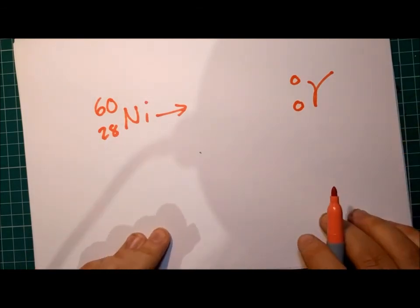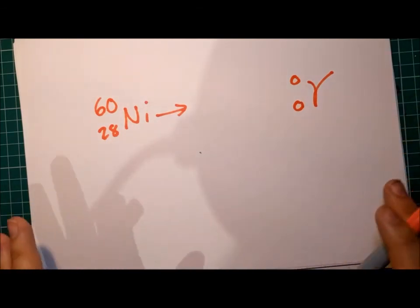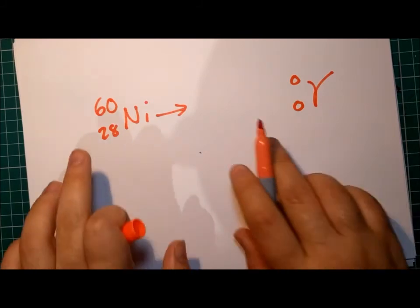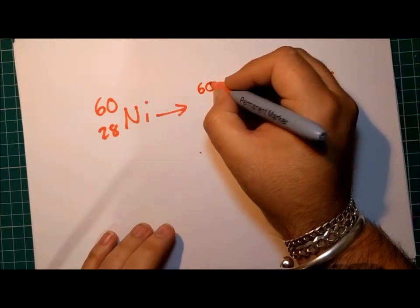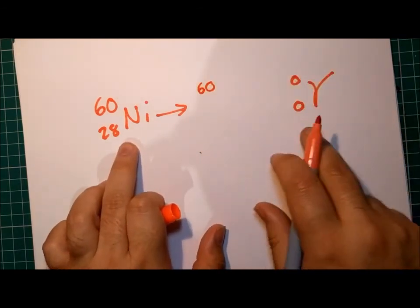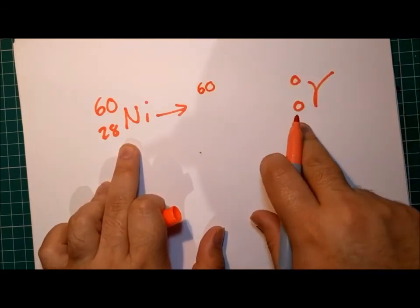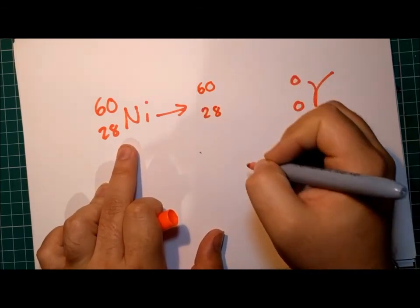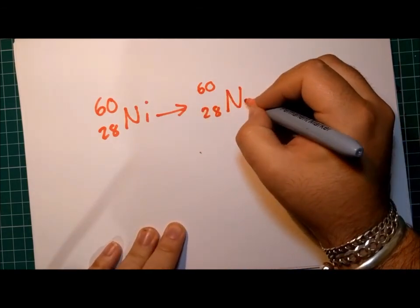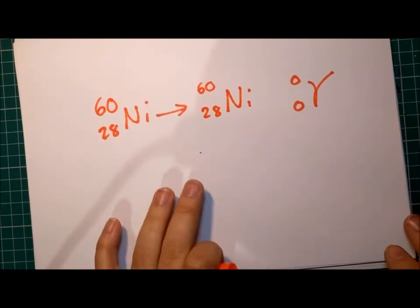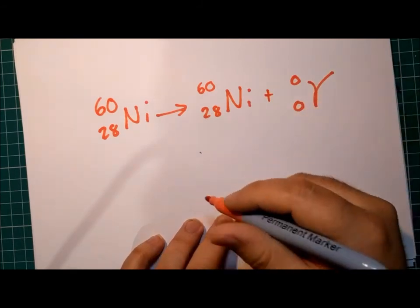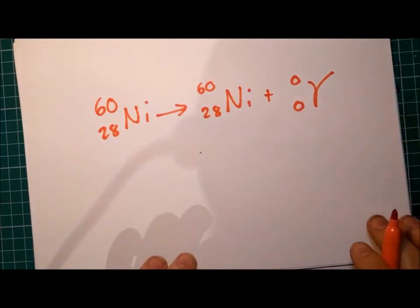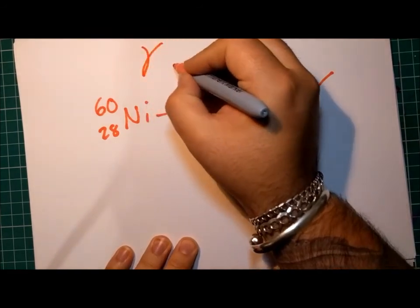Now, you may already be thinking, based on the two conservation rules we were talking about. Well, what plus zero is going to be 60. You're right, it's going to be 60. And what plus zero makes 28? Yeah, 28. So the identity of the nucleus doesn't change when it emits gamma radiation. But it does become a lower energy state. It becomes more stable in doing so. So that last one there is gamma emission.